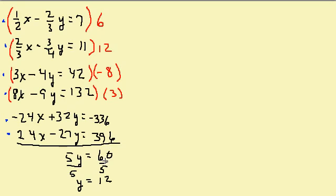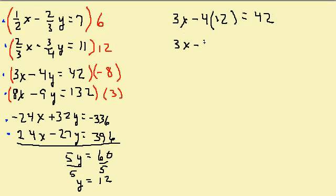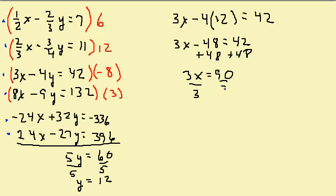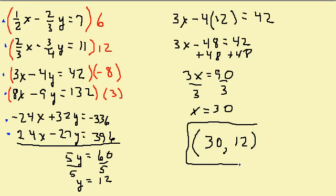I'm going to substitute y into the equation 3x minus 4y equals 42. So I have 3x minus 4 times 12 equals 42, which gives me 3x minus 48 equals 42. Adding 48 to both sides, I get 3x equals 90. Dividing both sides by 3, I get x equals 30. So my solution is (30, 12).